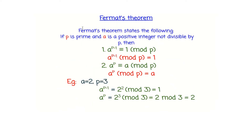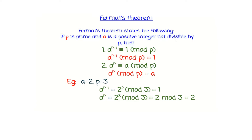Fermat's Theorem states that if P is prime and A is a positive integer not divisible by P, then the first condition is: A raised to P minus 1 is equivalent to 1 mod P.